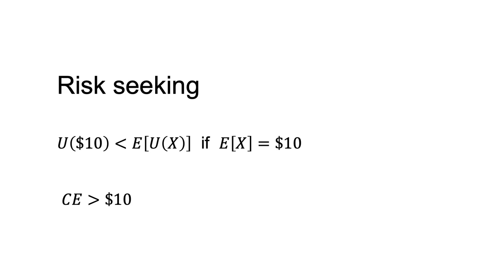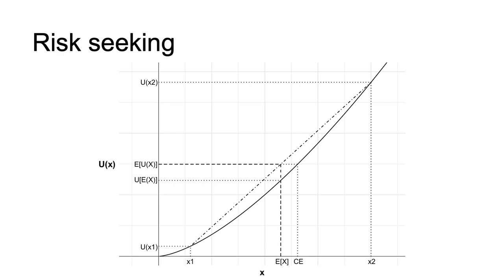Risk seeking. A risk-seeking person prefers a gamble to a sure sum equal to the expected value of that gamble. The certainty equivalent is more than the expected value of the gamble — the gamble has value in and of itself. The following chart illustrates. Again, a dash-dot line is drawn between the points on the utility curve for each of the two outcomes. That line is always above the utility curve. That is, for any probabilities involving those two outcomes — except one of those outcomes with certainty — the expected utility of the prospect is more than the utility of the expected value. The expected utility line between the two outcomes is always above the utility curve because the curve is convex. A convex curve leads to risk-seeking behaviour.